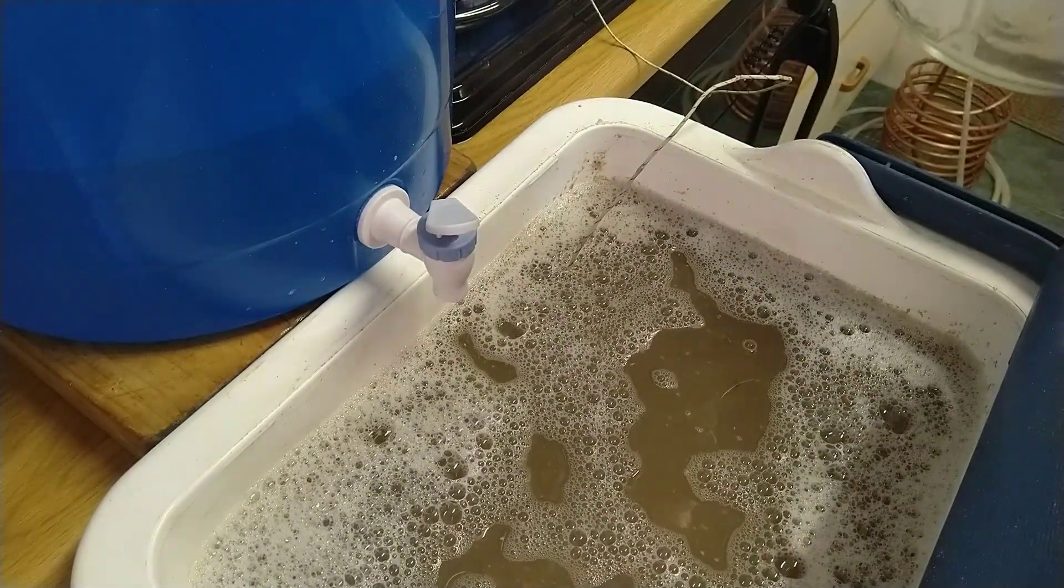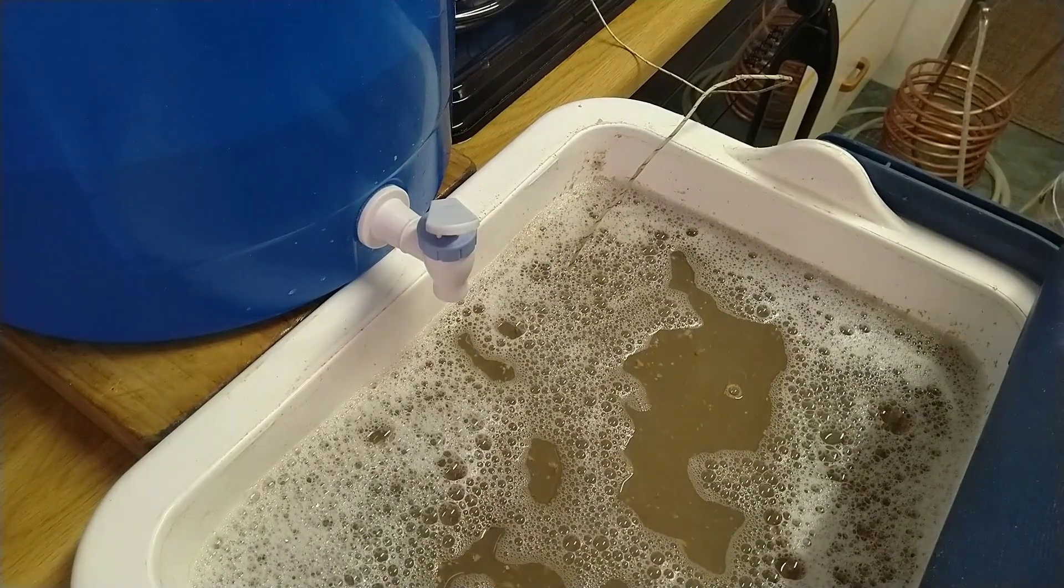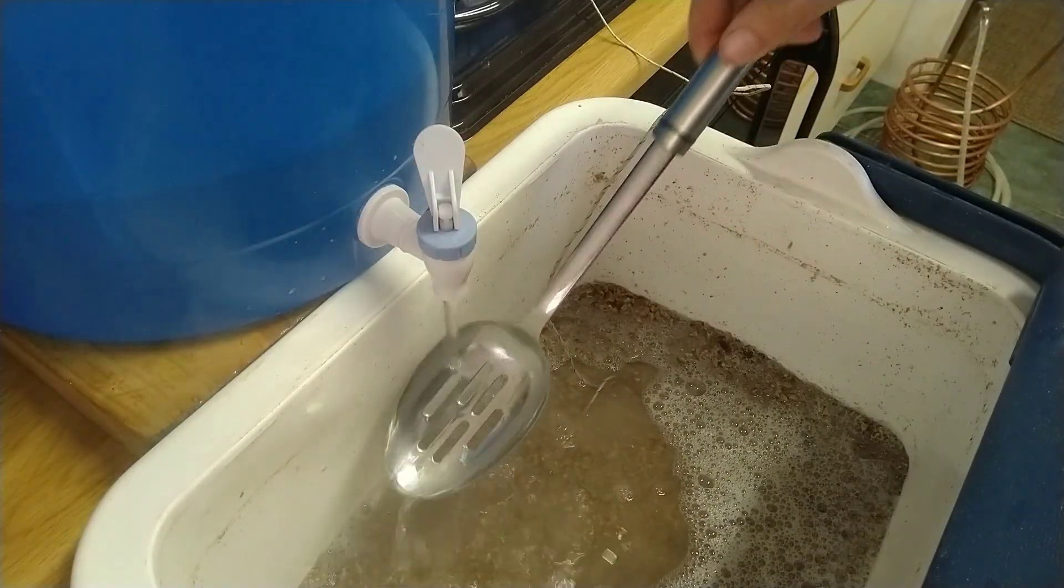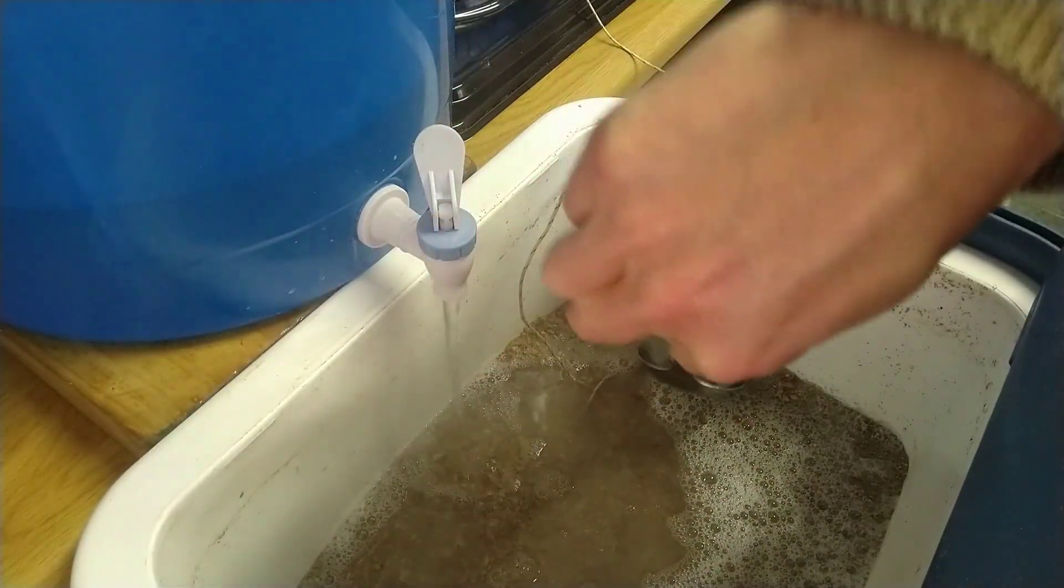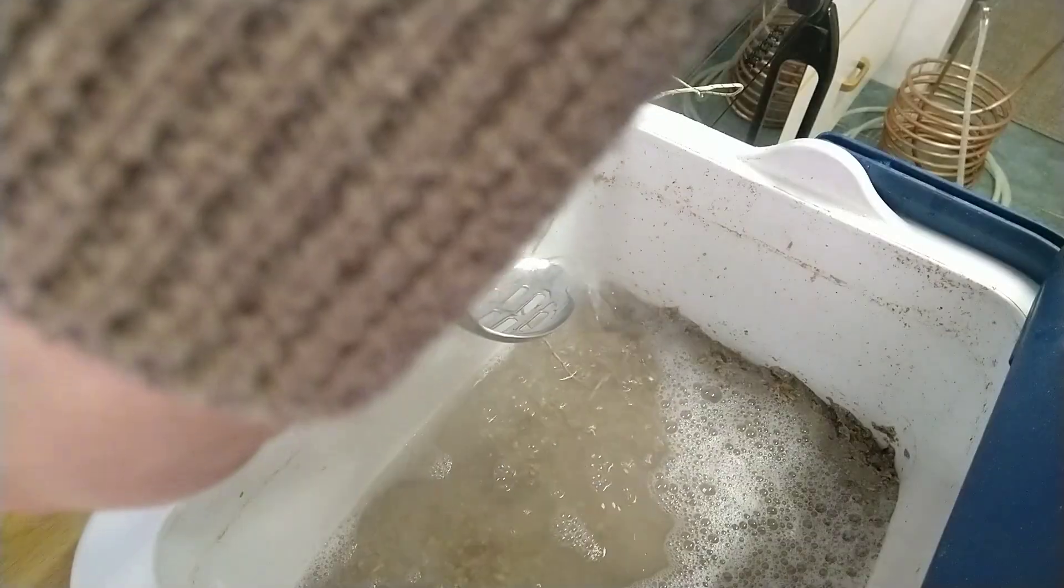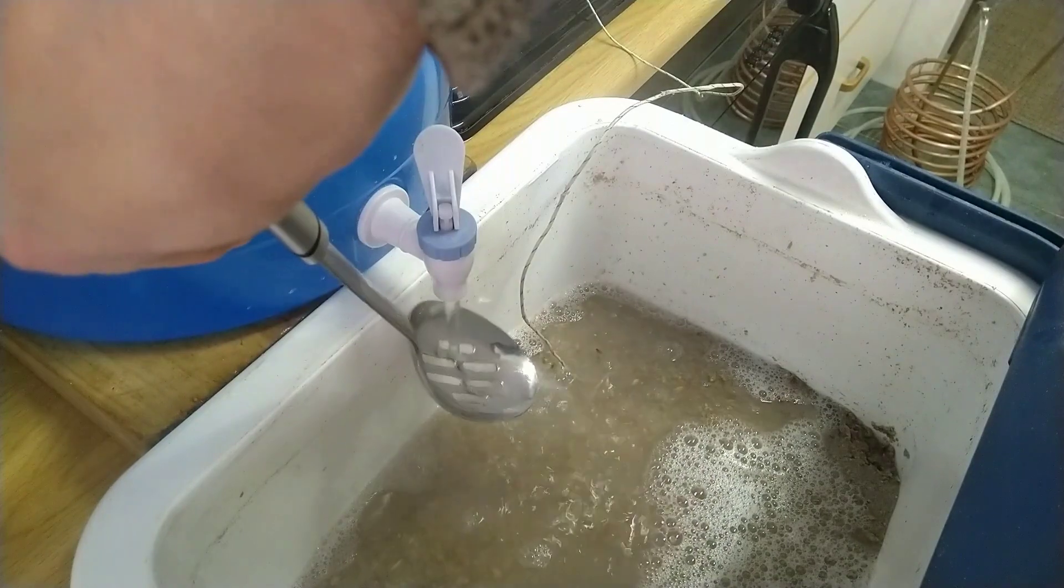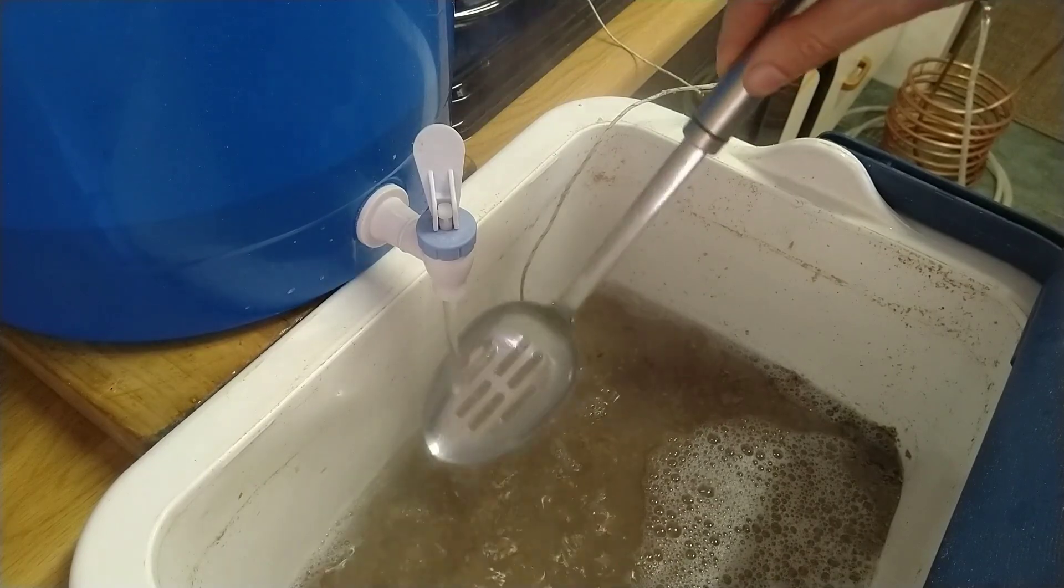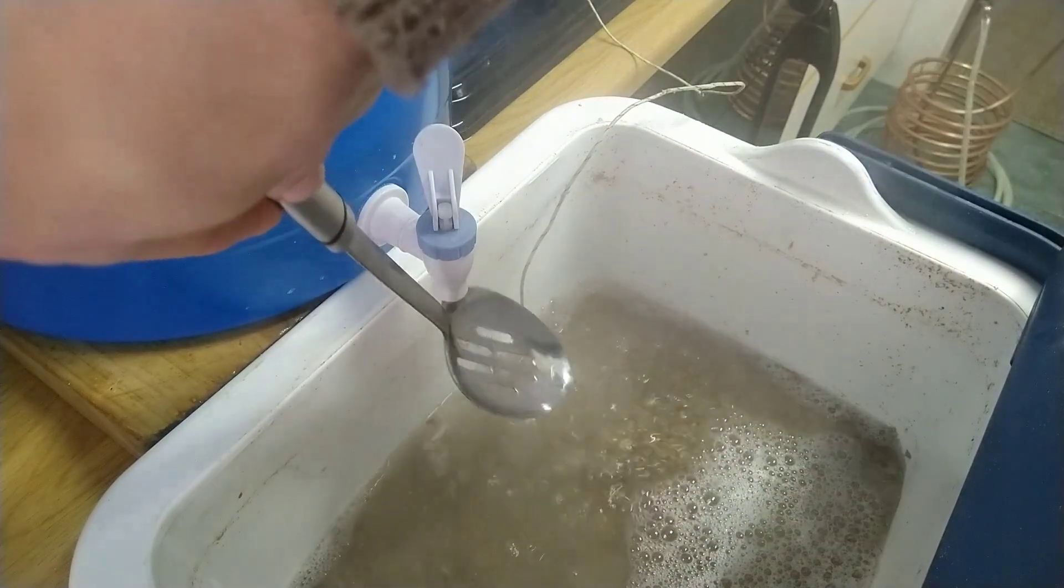We're not trying to convert sugars or have enzymes break carbohydrates down; we're just rinsing the grain bed, washing it off. This is quite hot water, 76 plus degrees Celsius. I'm trying to spread the water out instead of making a hole into the grain, smoothing out the grain bed.